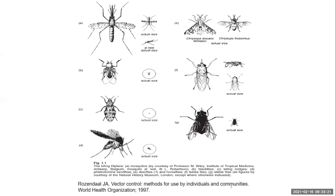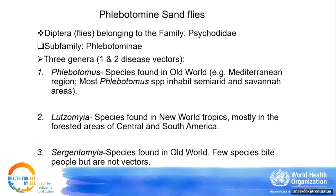This slide shows the disease vectors — insects that transmit diseases. This is the phlebotomine sandfly, and the one circled is the actual specimen. In terms of classification, it belongs to the order Diptera — they are flies.